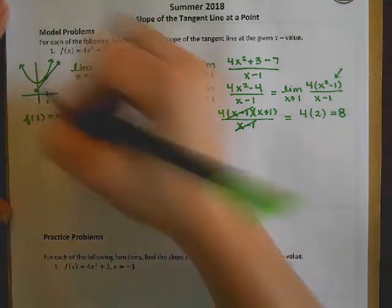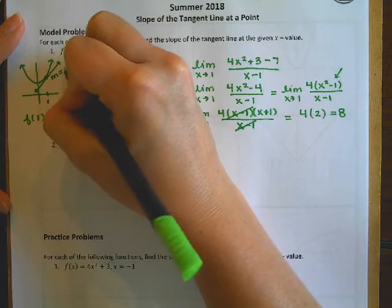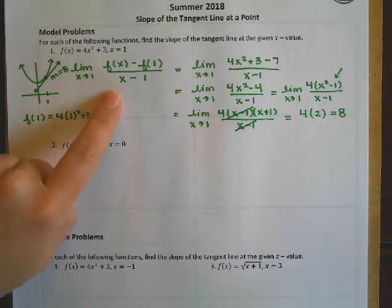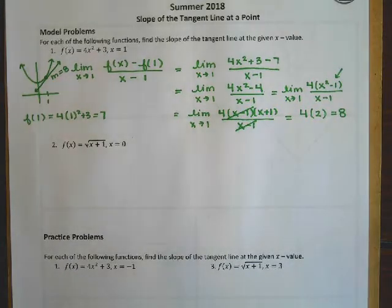And so what that tells me is the slope of this line here must be 8. And I know that because I found the derivative of that at that point. And so that tells me the slope of the tangent line at that x value.